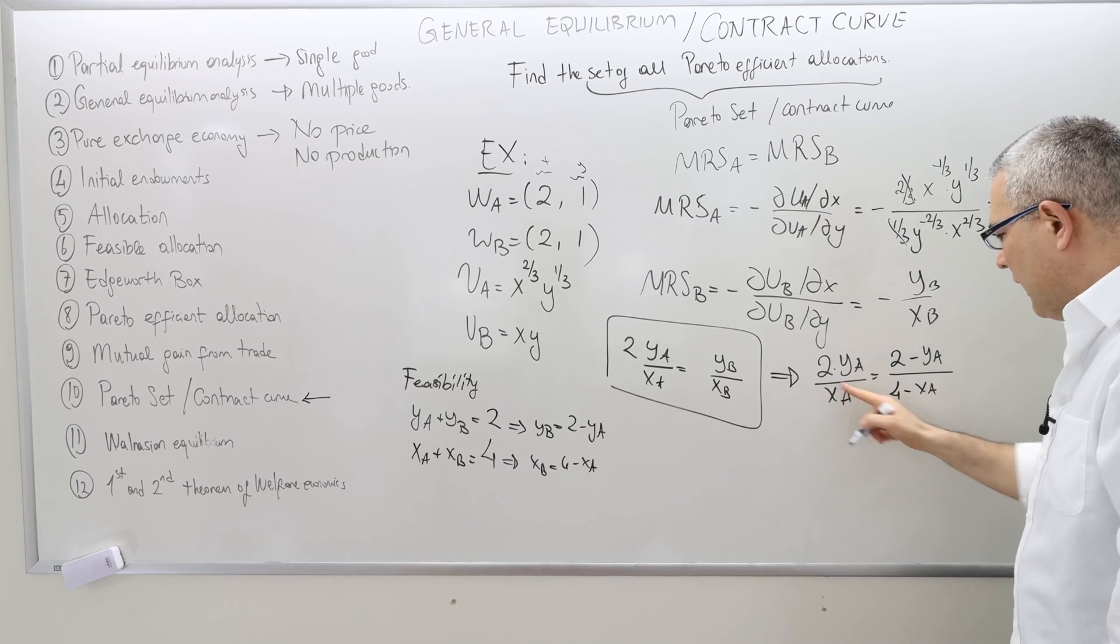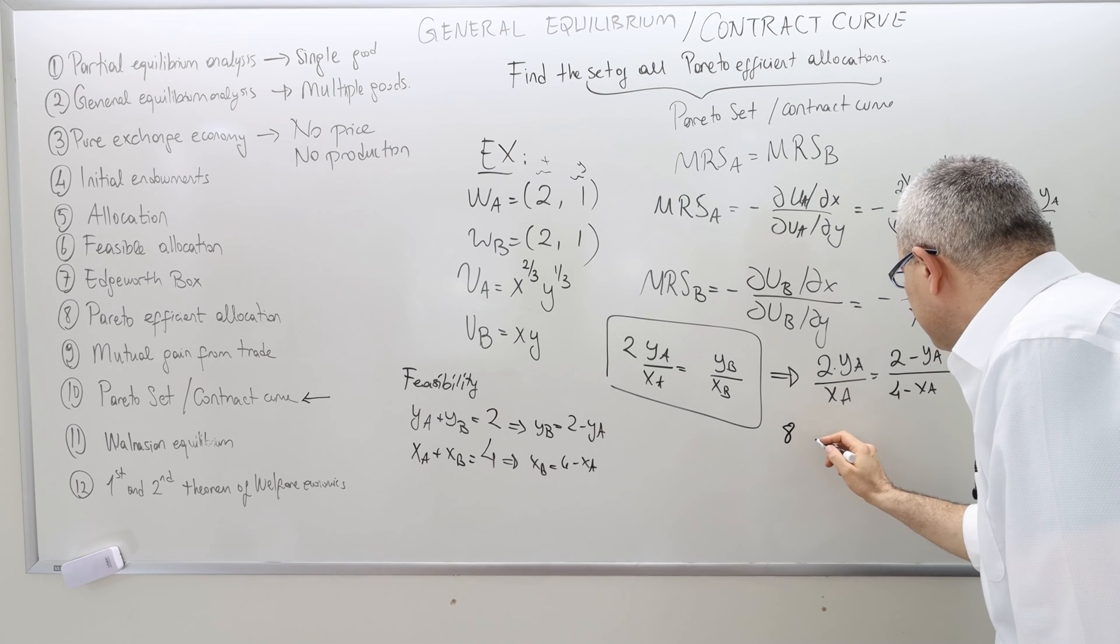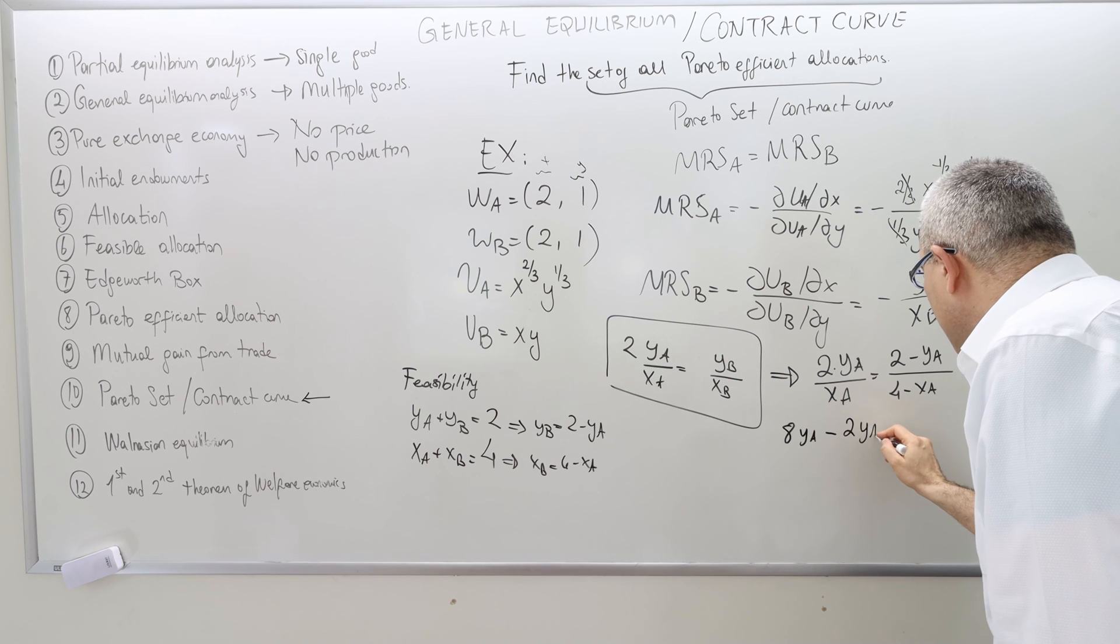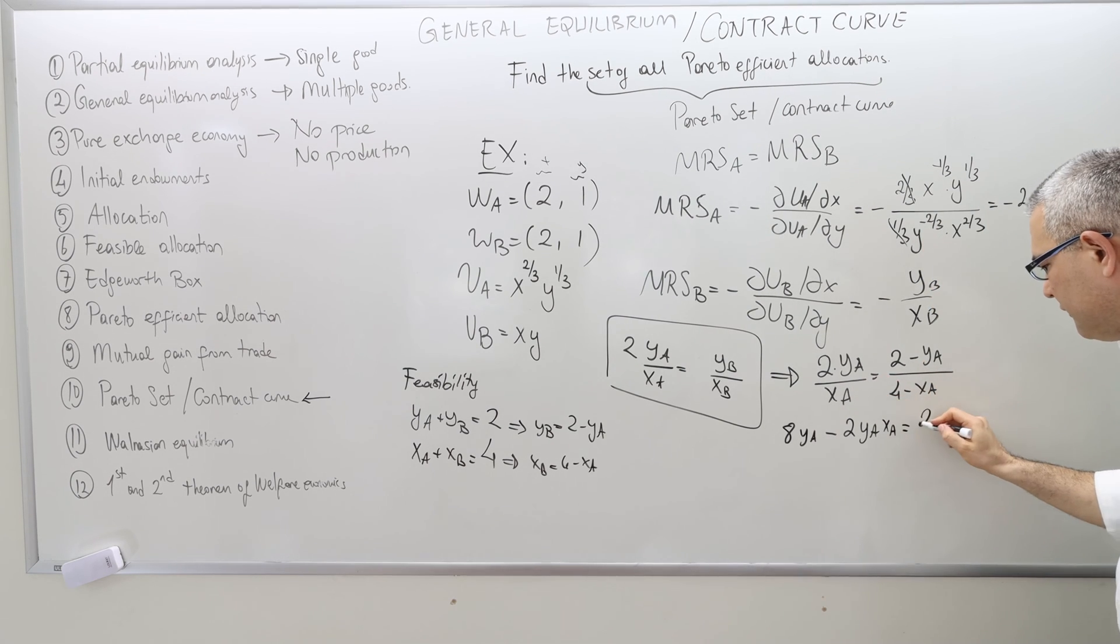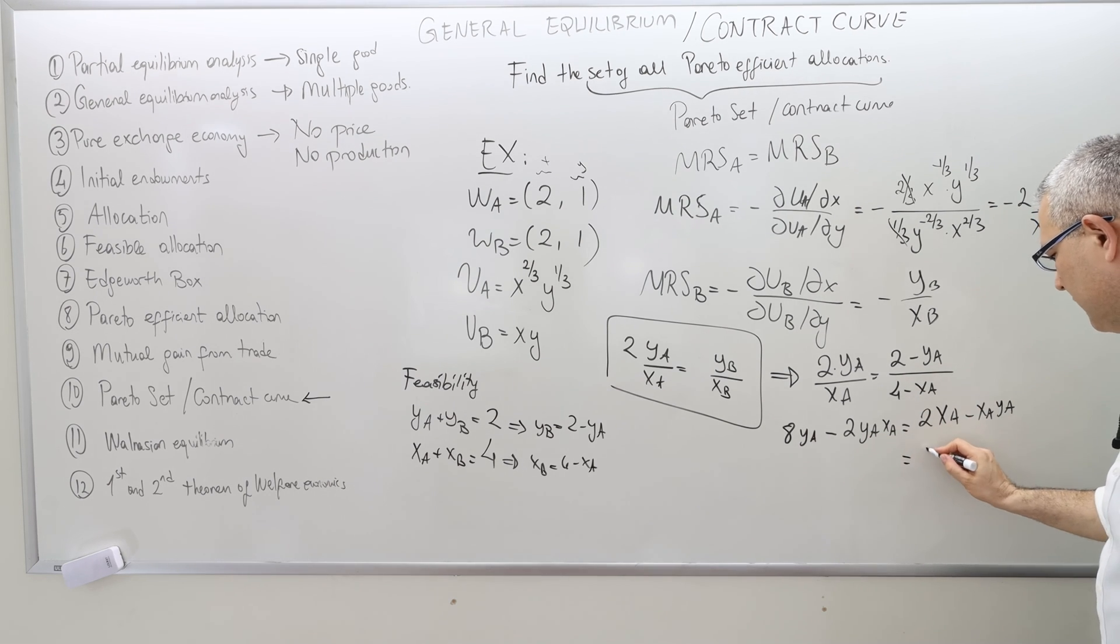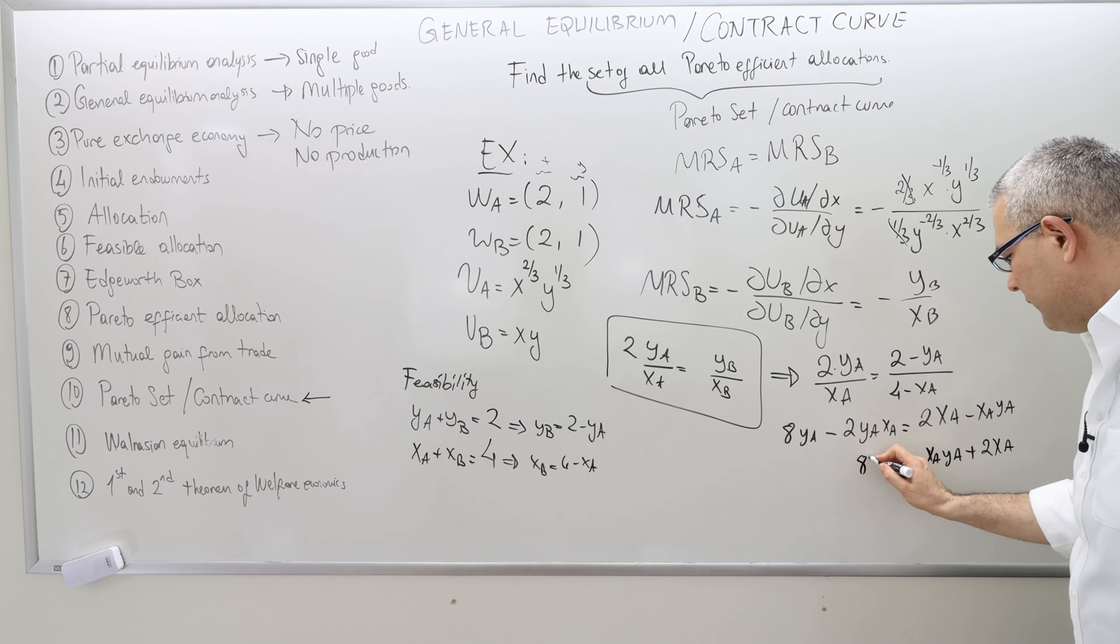Therefore, the contract curve is the following: 2 times y_A divided by x_A. The left-hand side is the same. The right-hand side is 2 minus y_A, and then x_B is 4 minus x_A. So do the cross product. We have 8 y_A minus 2 y_A x_A equals to 2 x_A minus x_A y_A.